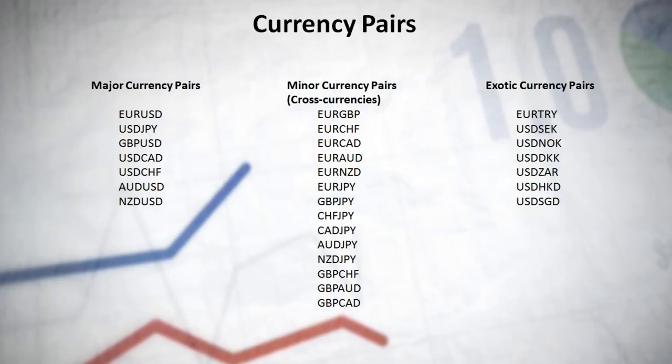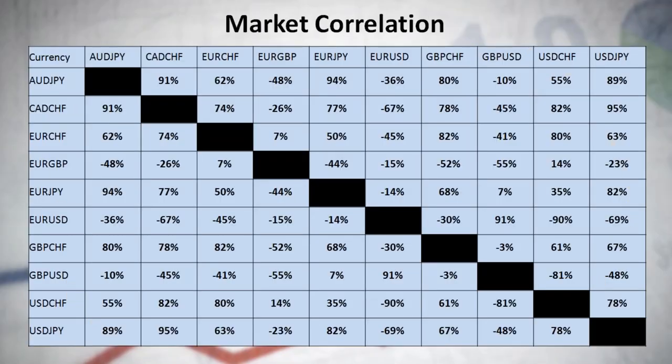Let's now speak about correlation. Currency pairs correlate with each other. Please look at this table on the screen — this is the table of correlation. I took it from the internet; it can be found on many websites devoted to Forex. In the financial world, correlation is a statistical measure of how two securities move in relation to each other.